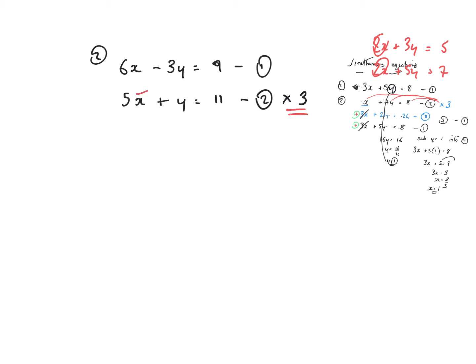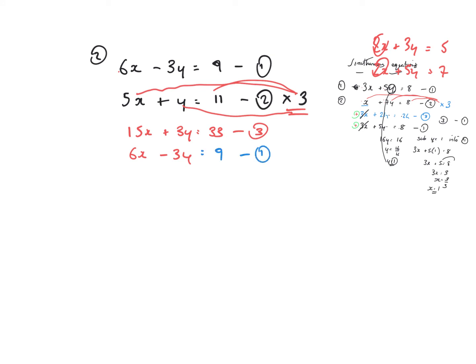Multiplying everything in equation 2 by 3: 5x times 3 gives 15x, y times 3 is 3y, and 11 times 3 is 33. That's equation 3. Now rewriting equation 1 underneath — 6x minus 3y equals 9. The signs on the y terms are different, which tells me to add. Equation 3 plus equation 1: 15x plus 6x is 21x, and 33 plus 9 is 42. So x equals 42 over 21, which is 2.